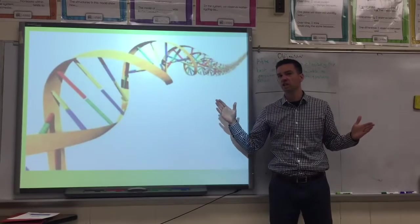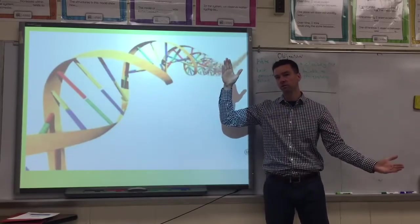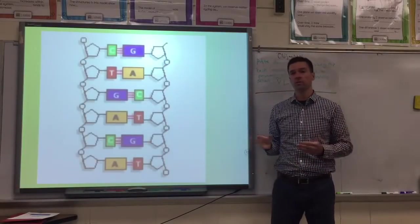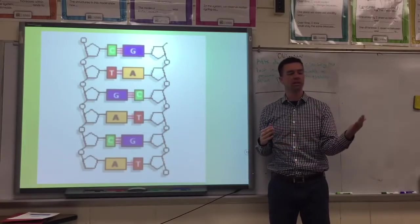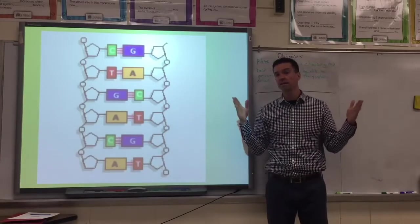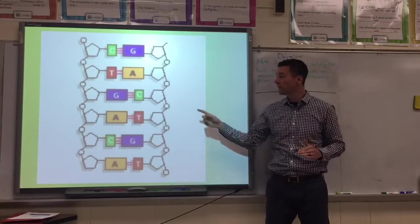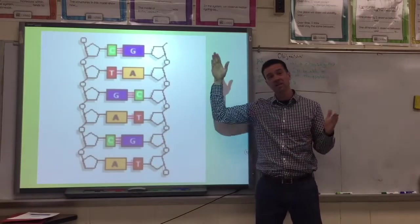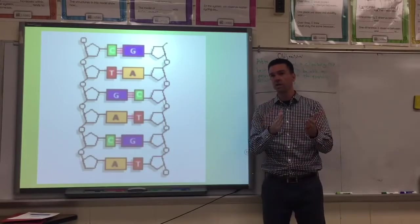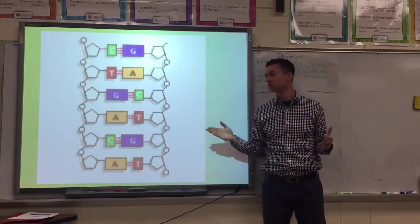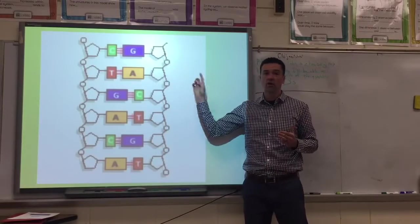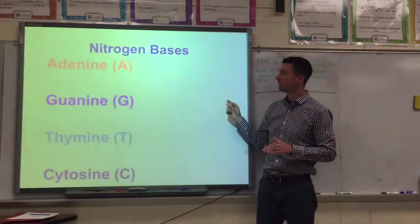Our DNA is millions and millions of letters long, and it's this crazy long molecule. If we look closely, it's made up of only four letters — which is kind of crazy, because the reason that we look different than a banana all has to do with just these four letters. What makes us, a banana, a sheep, and a worm all so different is just that we have those letters in a different order, the same way a book is different from another book because the words are in different orders.